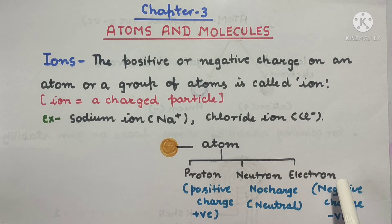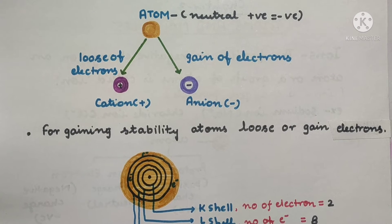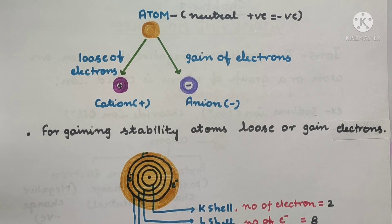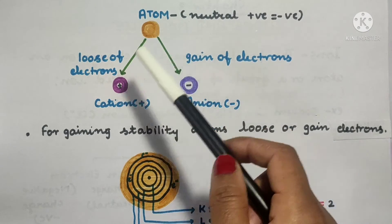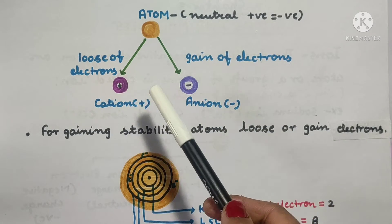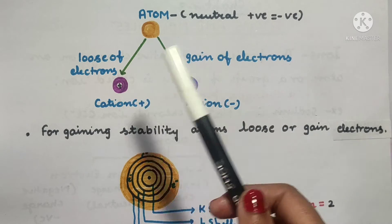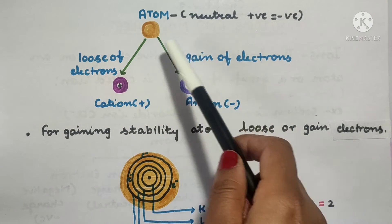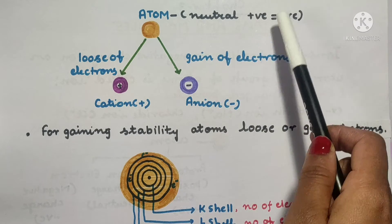Atoms are neutral particles. An atom has three sub-particles. In an atom, we have positively charged protons and negatively charged electrons. The positive charge and the negative charge are equal, which is why the atom is neutral overall.